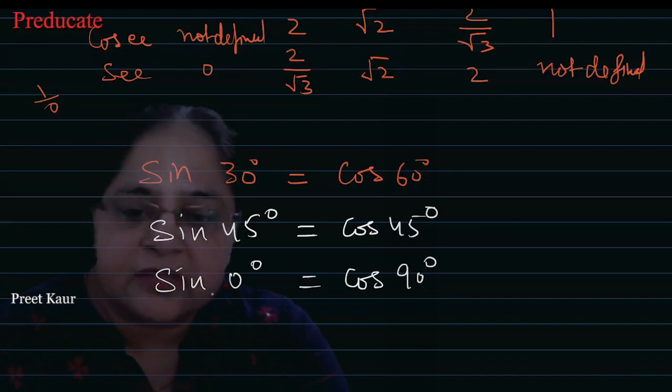And this reverse also works, meaning cos 0 degree and sine 90 degree both have value 1. 30 and 60 are complementary angles that make 90, so all those angles will have the same value.